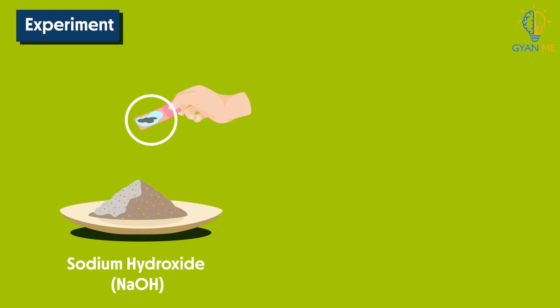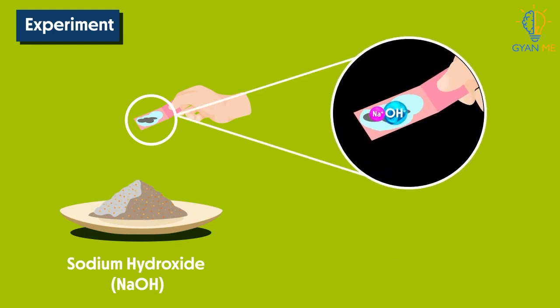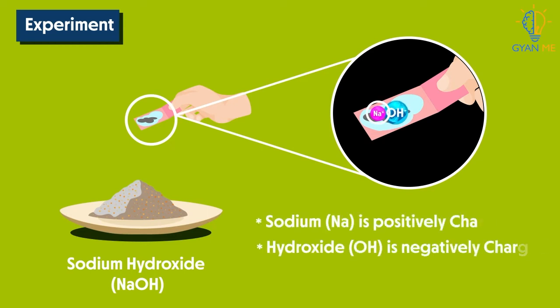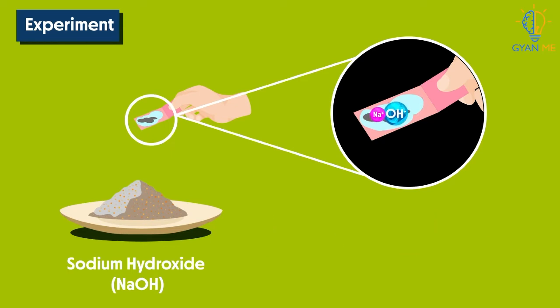When we dissolve sodium hydroxide in water, it produces positive ion, that is sodium ion, and negative ion, that is hydroxide ion. Thus, we can say that bases generate hydroxide ions only in aqueous solution and not in dry state.